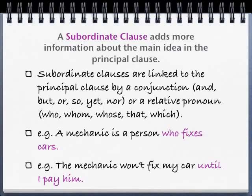A subordinate clause adds more information about the main idea in the principal clause. Subordinate clauses are linked to the principal clause by a conjunction — for example, and, but, or, so, yet, or nor — or they can be linked by a relative pronoun: who, whom, whose, that, and which. For example: 'A mechanic is a person who fixes cars.' Who fixes cars is a subordinate clause starting with the relative pronoun who. Another example: 'The mechanic won't fix my car until I pay him.' Until I pay him is a subordinate clause joined with the conjunction until.